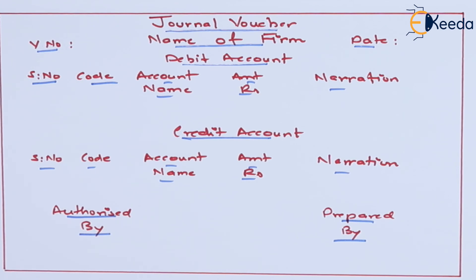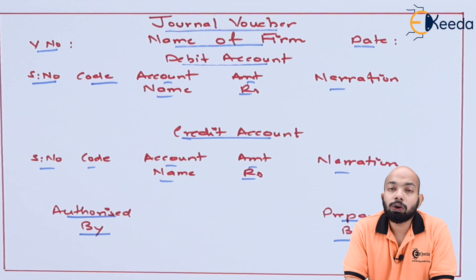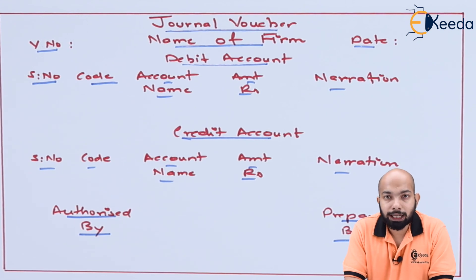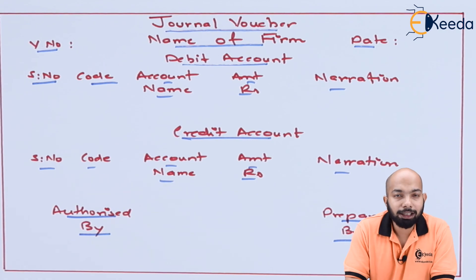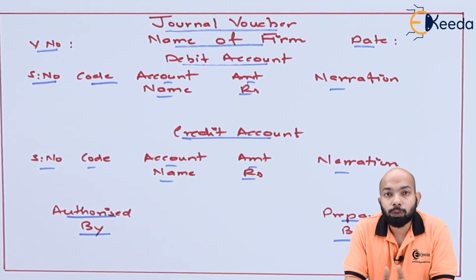This video described the preparation of vouchers — transactional vouchers and journal vouchers. A debit voucher has all the columns required for a debit voucher; the credit voucher has all details required for a credit voucher. For complex or journal vouchers, both the debit and credit accounts are combined, because there are multiple transactions in one. Single instances in one transaction are handled by either the debit or credit voucher as per the nature of the transaction. Thank you for watching — stay tuned with Ekeeda.